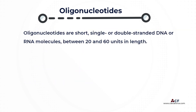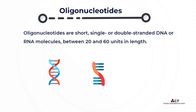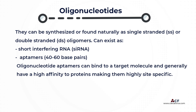Oligonucleotides are short, single, or double-stranded DNA or RNA molecules between 20 and 60 units in length. They can be synthesized or found naturally as single-stranded (SS) or double-stranded oligomers.